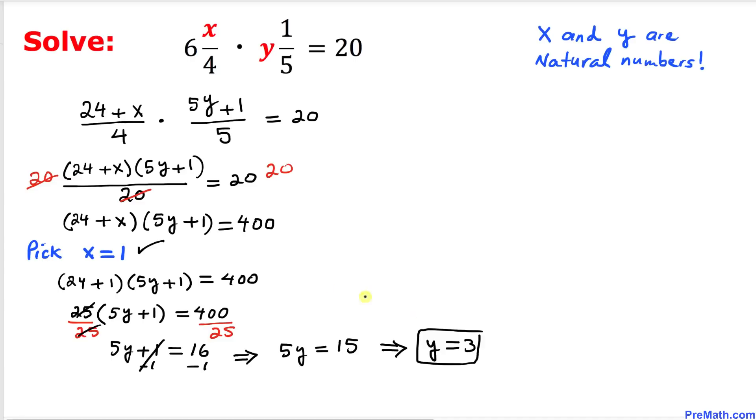That means our y value is 3. And we can see both x equal to 1 and y equal to 3 are both natural numbers. So thus our solution turns out to be x equal to 1 and y equal to 3.